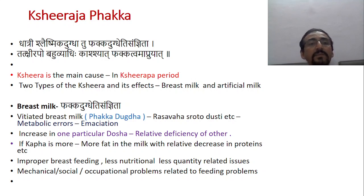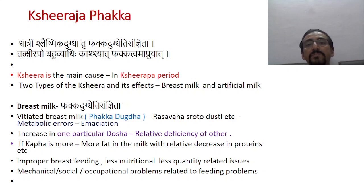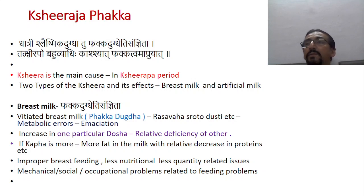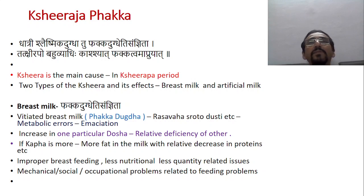Kshira is the main cause in the kshiraja condition. Two types of kshira can be seen: one is breast milk, or artificial milk. If breast milk is not available, Ayurveda says to go for dhatri's milk as the second option. But in the contemporary medical sense, if breast milk is not available, you go for either artificial milk or animal milk. That is the beauty of Ayurveda.